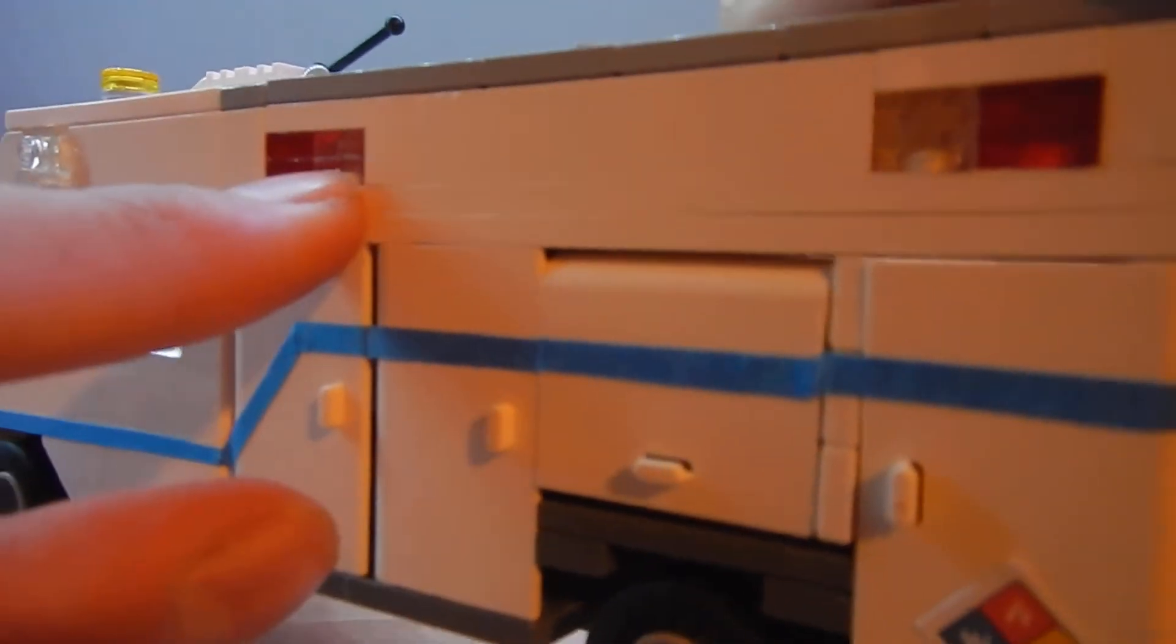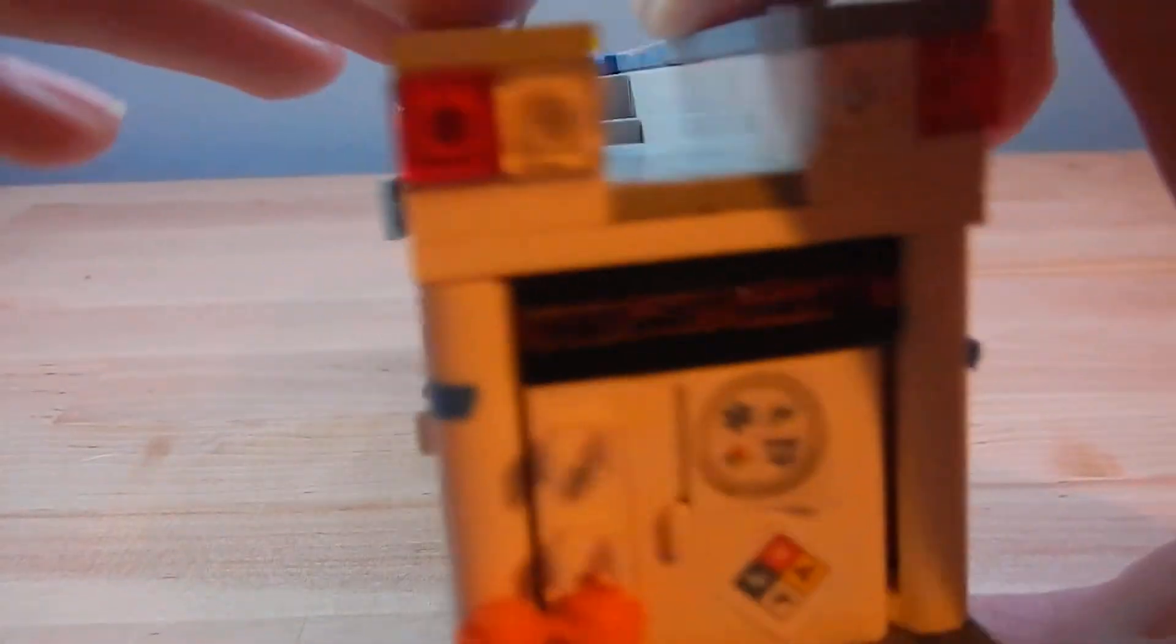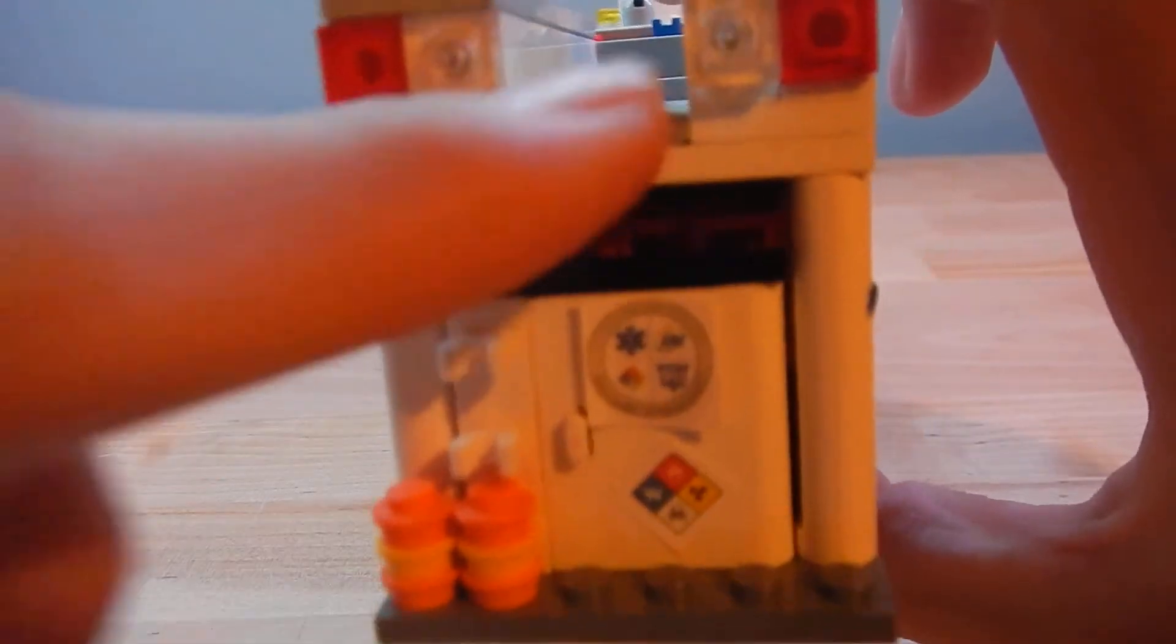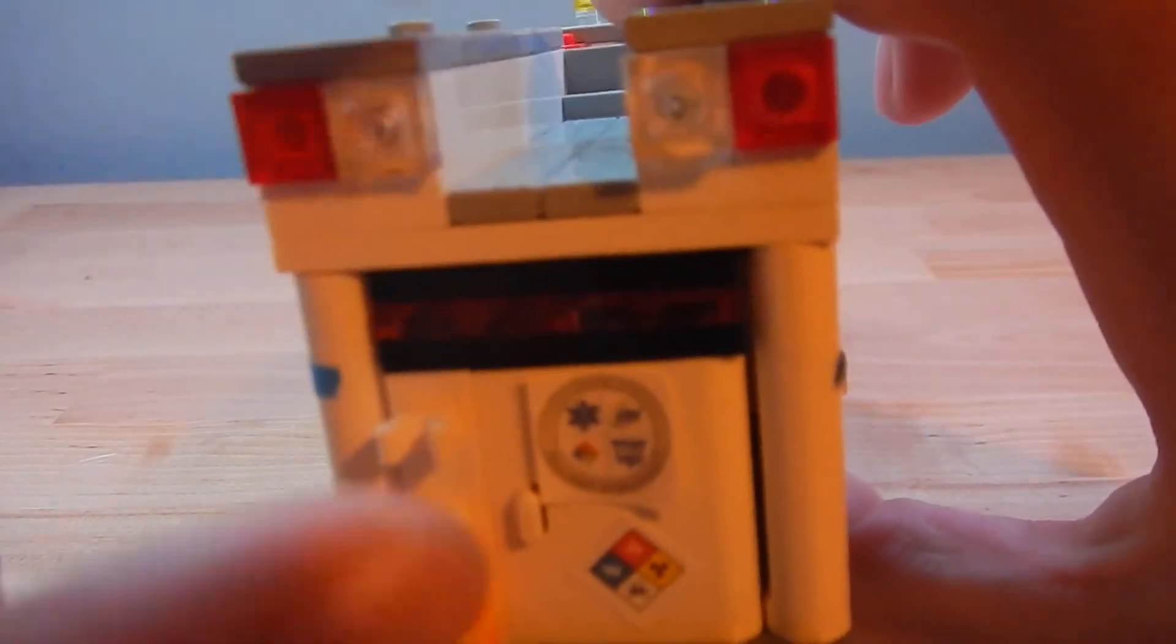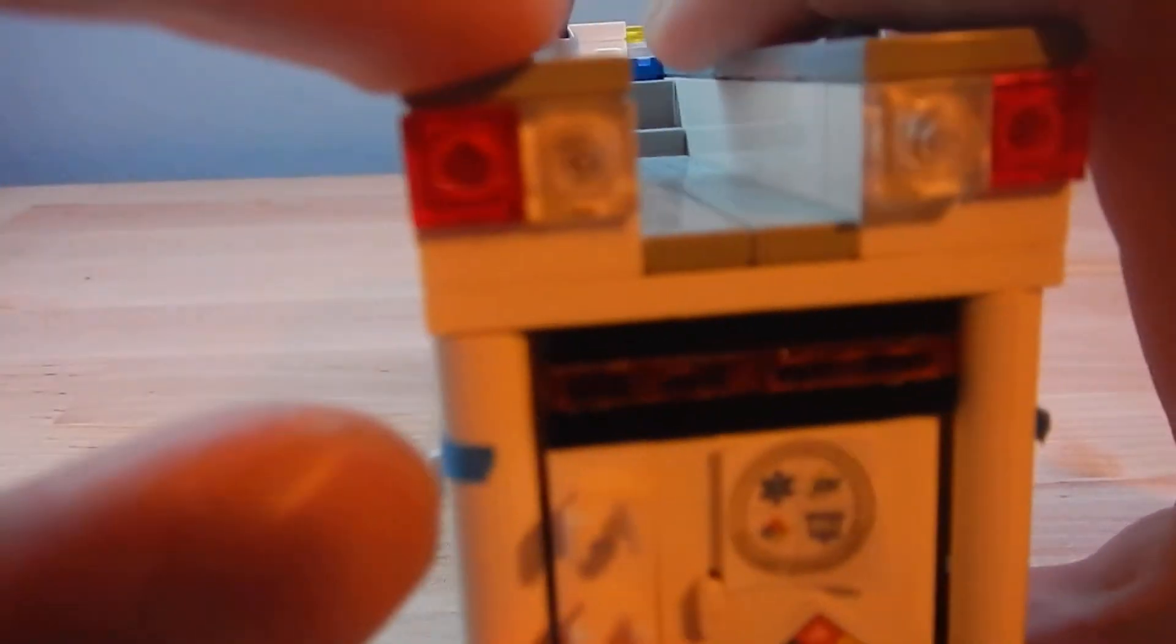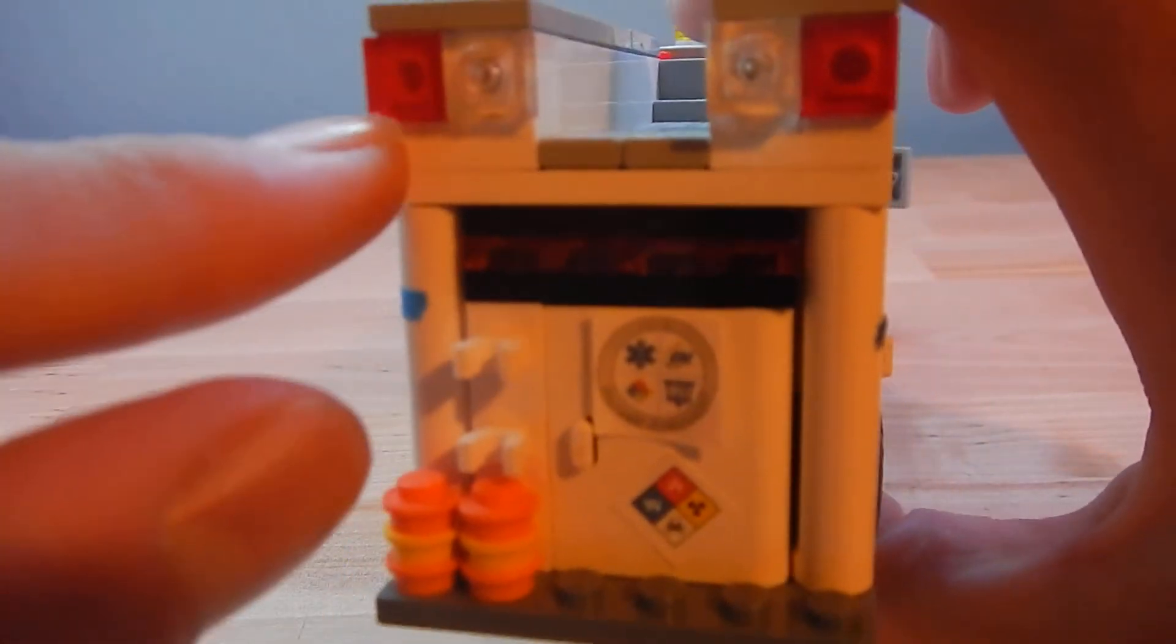You got the hazmat logo, red warning, scene light, scene light and red warning. The back here you got steps up to the compartments on the roof, then you got warning lights and scene lights up here.